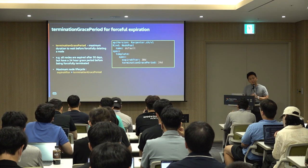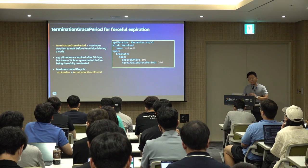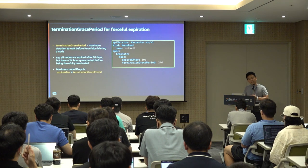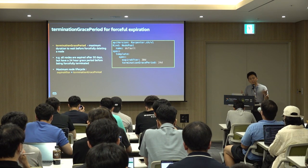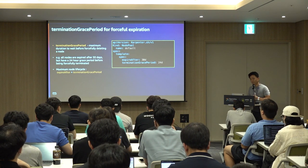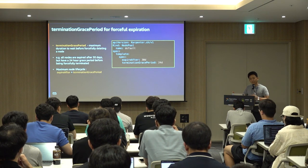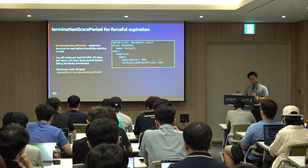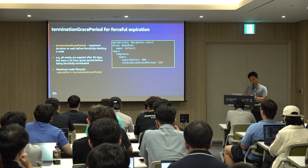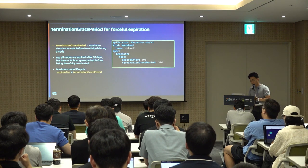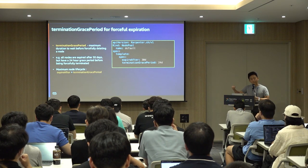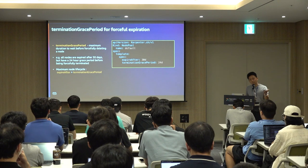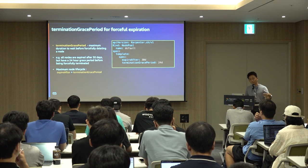When you have an 'expire after' policy — such as refreshing AMI every 30 days — if disruption controls like PDB are in place, worker nodes may not terminate. At large scale with multiple teams, it's hard to track these outliers during upgrades. Karpenter adds a termination grace period feature: after that grace period expires, nodes are force-deployed regardless of disruption controls, converting them to involuntary disruptions.